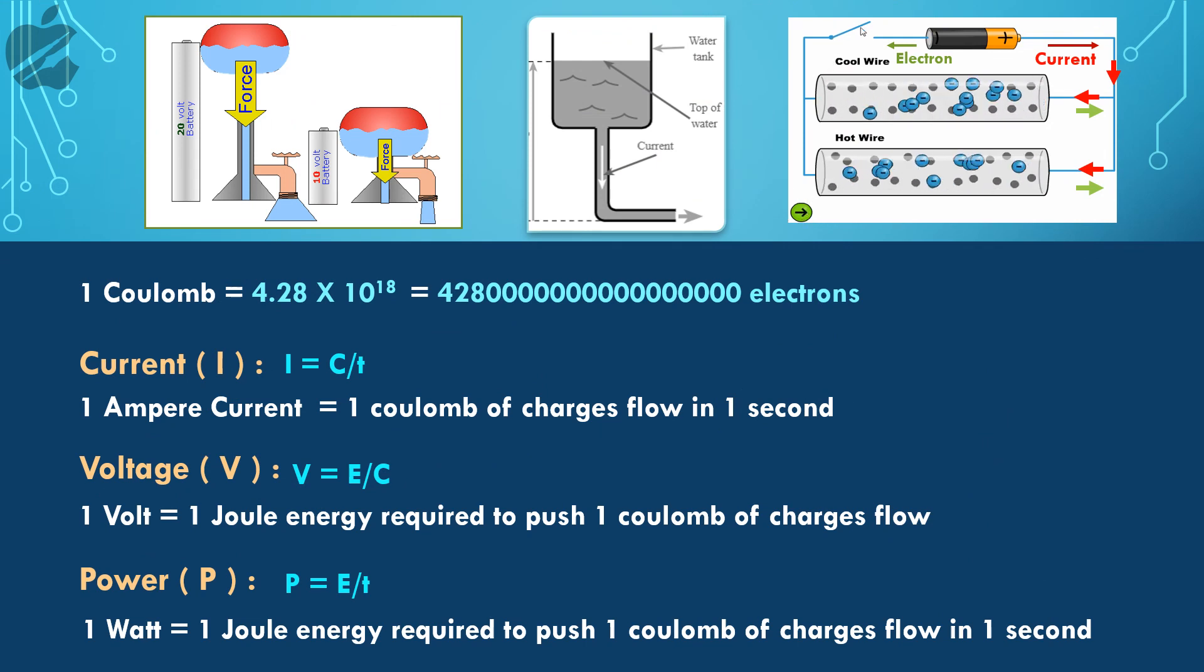42.8 trillion electrons equals 1 coulomb, and this amount of charge flowing in 1 second is called 1 ampere current. Voltage is 1 joule of energy required to push that 1 coulomb of electrons, i.e. 1 volt. Power is 1 joule of energy required to push 1 coulomb of charge in 1 second, i.e. 1 watt power.